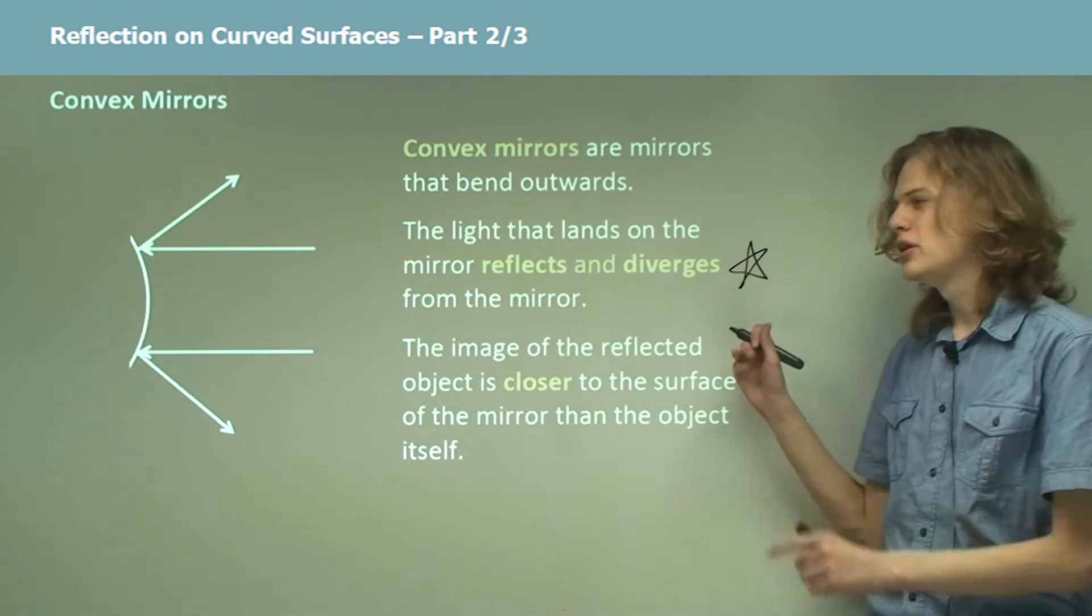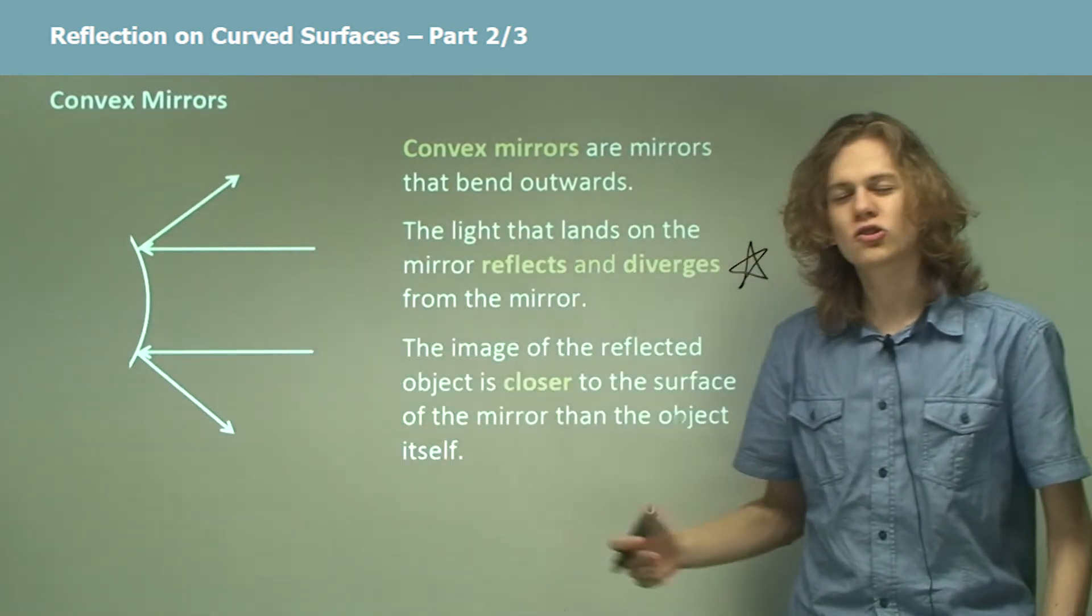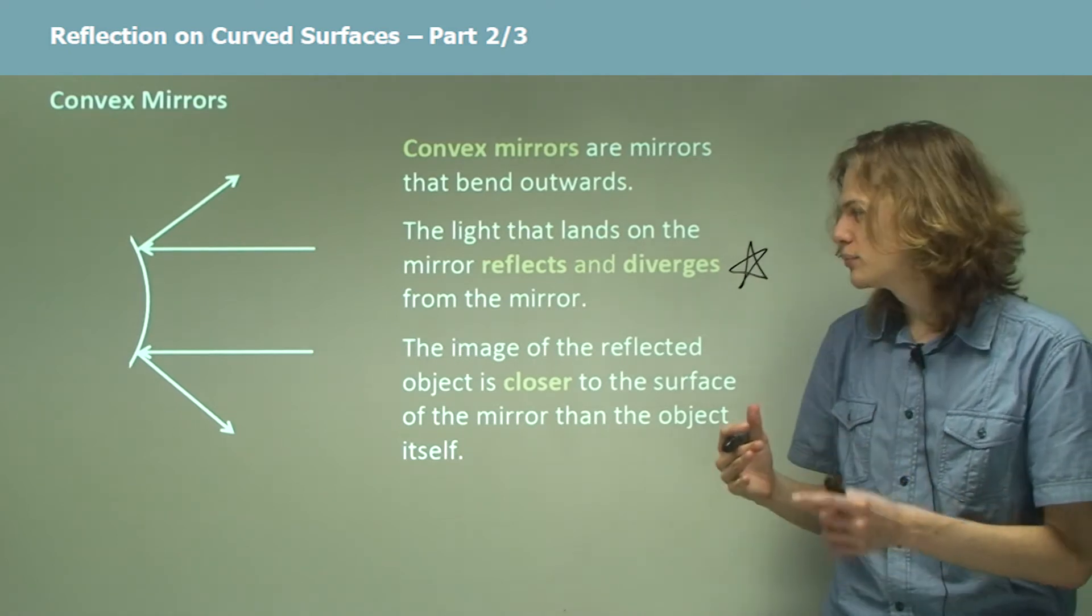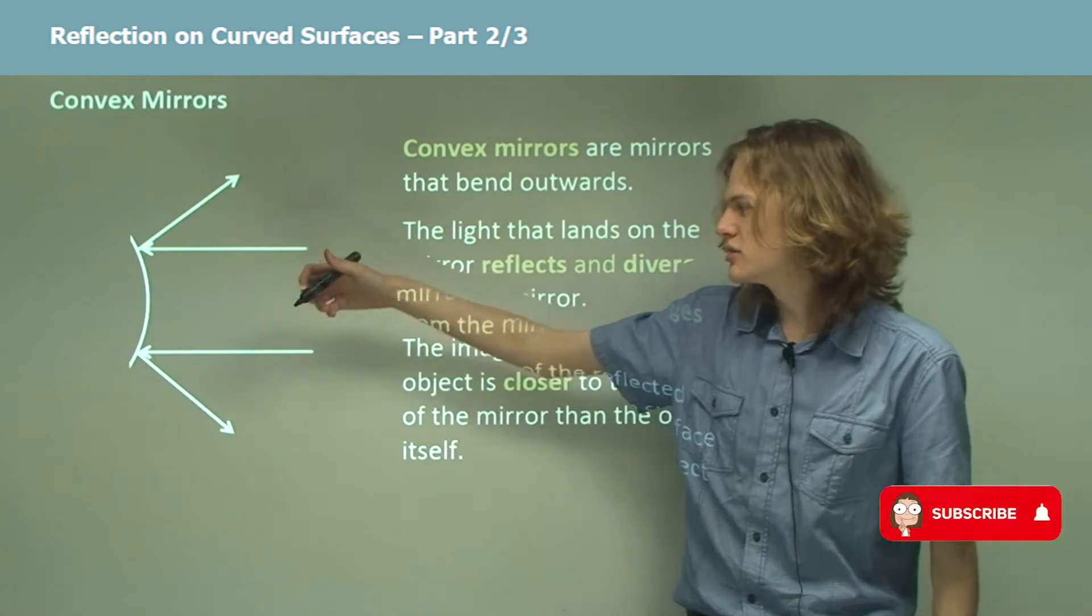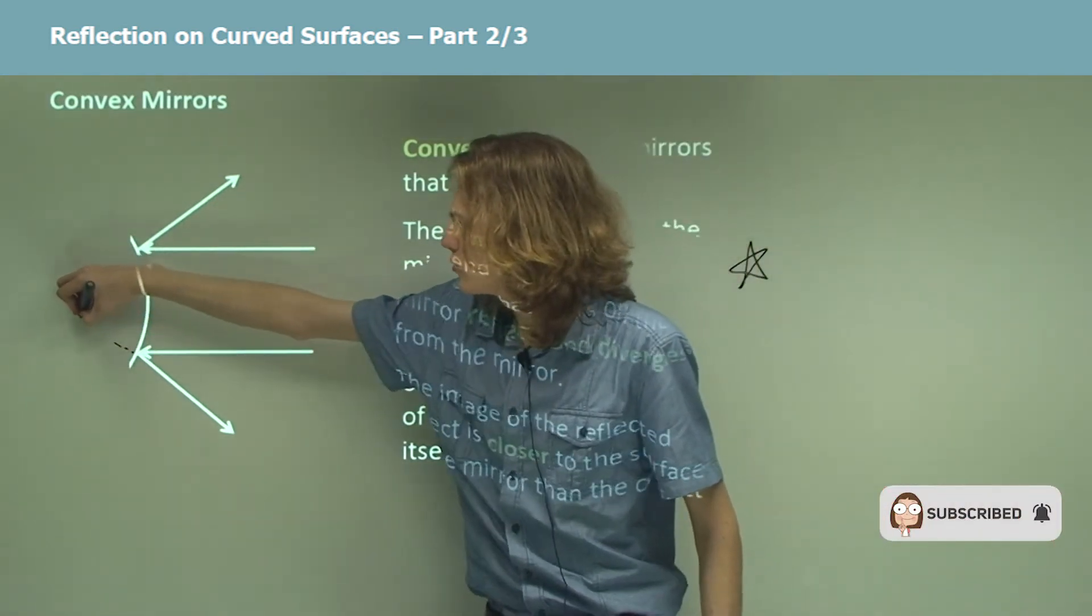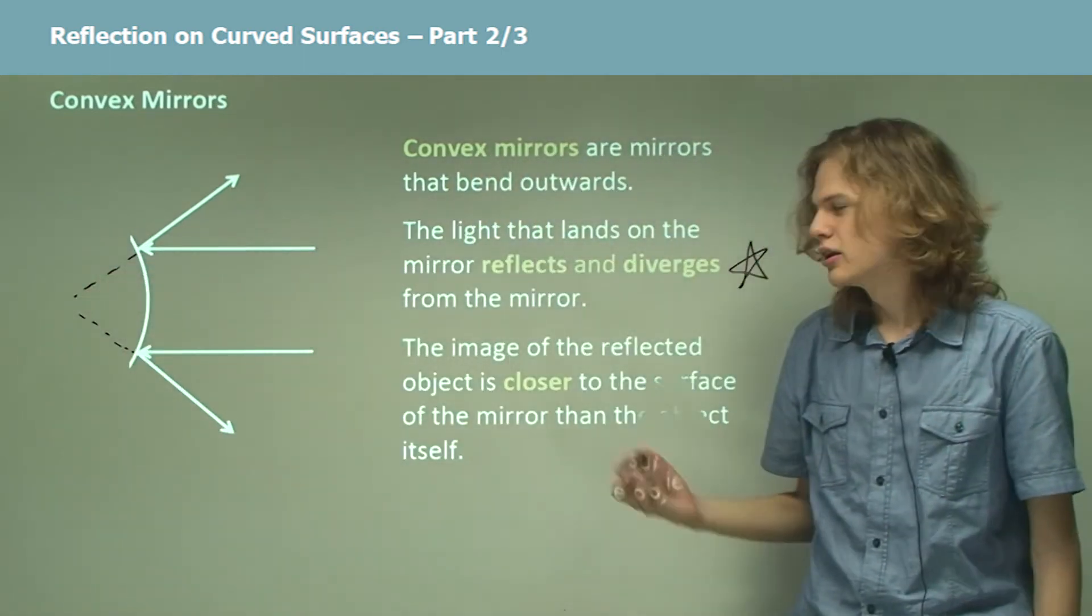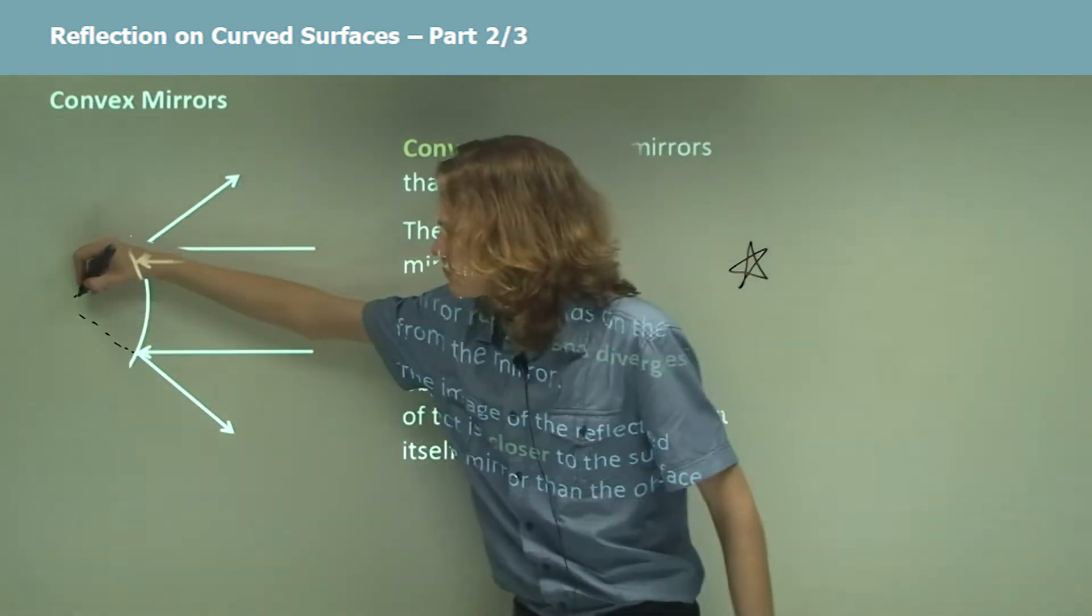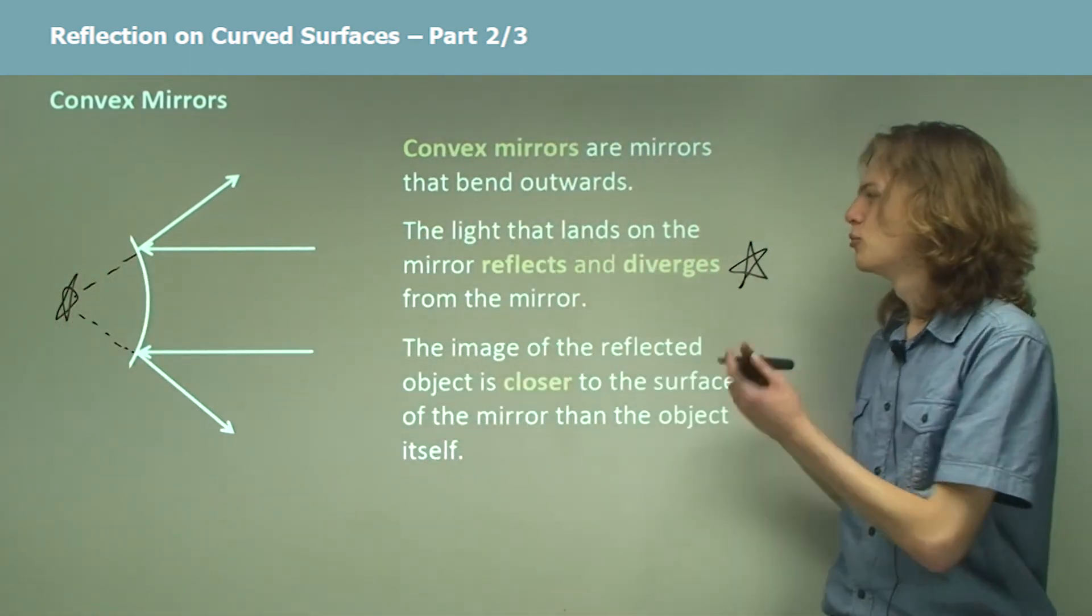When this light comes down from here, it reaches the mirror fairly parallel. If we're looking at this light, then our brains extrapolate from the straight lines it sees and says that the source of the light must be behind the mirror at this point, which is much closer to the mirror than our original object.